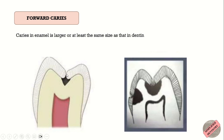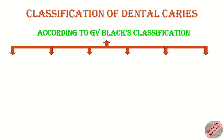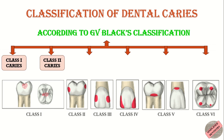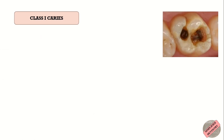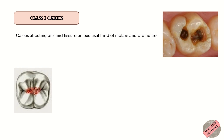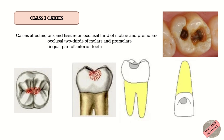Next is G.V. Black's classification of dental caries, according to which dental caries is of six types: Class 1, Class 2, Class 3, Class 4, Class 5, and Class 6. Class 1 caries affects pits and fissures on the occlusal third of molars and premolars, the occlusal two-thirds of molars and premolars, and the lingual part of anterior teeth. So Class 1 caries is basically seen on the occlusal or lingual surface — the occlusal surface of the posterior teeth and the lingual surface of the anterior teeth.